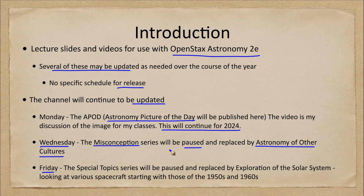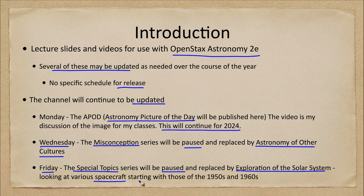On Fridays I've been doing special topics in astronomy, and I am going to pause that as well — it'll probably come back at some point. I'm going to start a new series on exploration of the solar system, looking at the different spacecraft that have been launched — starting with Sputnik back in the 1950s — to study Earth from orbit and various parts of our solar system, including the Moon and other objects.